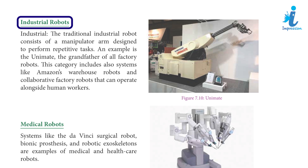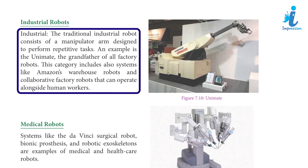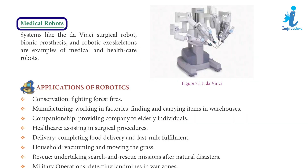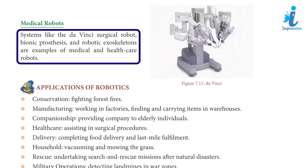Industrial Robots: The traditional industrial robot consists of a manipulator arm designed to perform repetitive tasks. An example is the Unimate, the grandfather of all factory robots. This category also includes systems like Amazon's warehouse robots and collaborative factory robots that can operate alongside human workers. Medical Robots: Systems like the Da Vinci surgical robot, bionic prostheses, and robotic exoskeletons are examples of medical and healthcare robots.